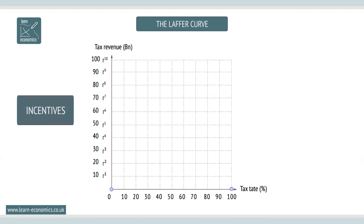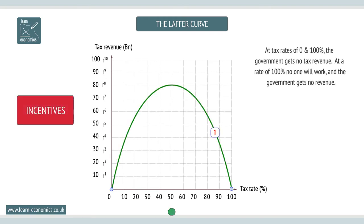At tax rates of 0 and 100%, the government gets no tax revenue. At a rate of 100%, no one will work and again the government gets no revenue.